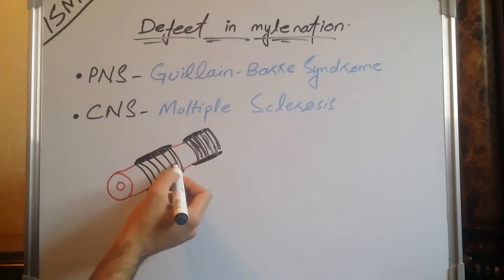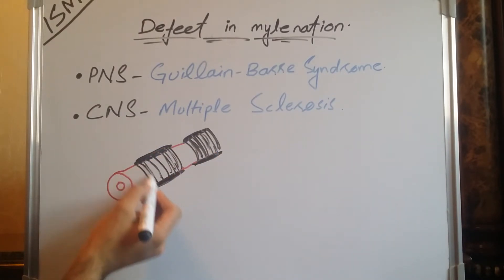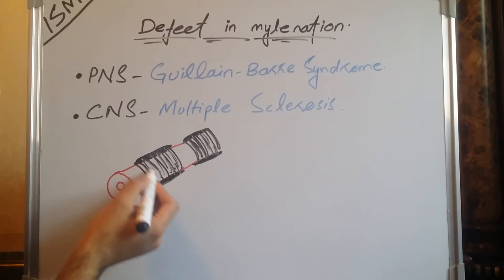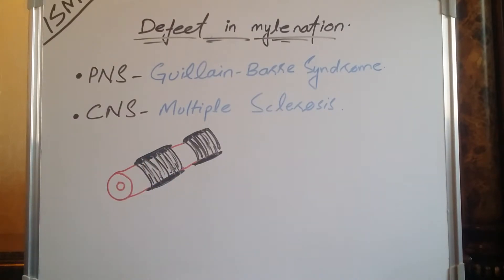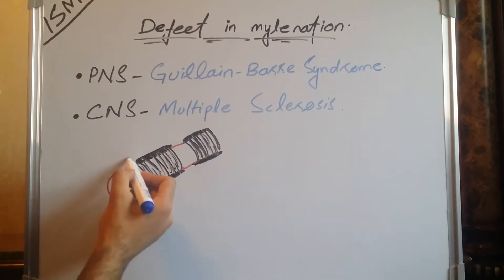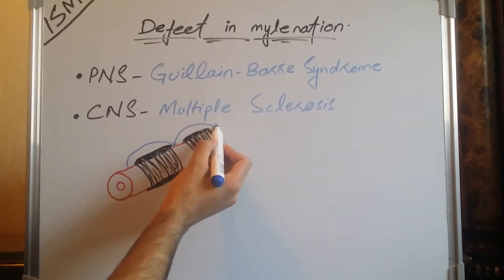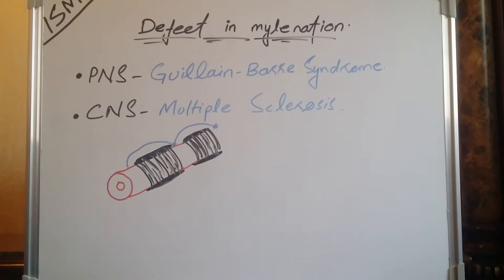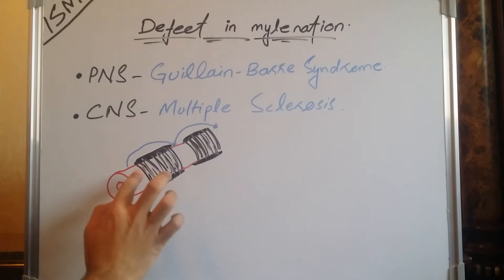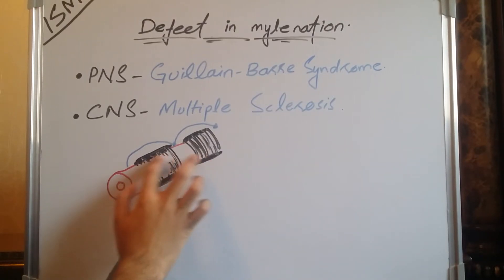This is the neuron and these are the axon endings. In this neuron, as we discussed, the electrical impulse normally moves from node of Ranvier to node of Ranvier. This conduction is called saltatory conduction and it is fast. However, due to any physiological defect, the myelination of these neurons degenerates.